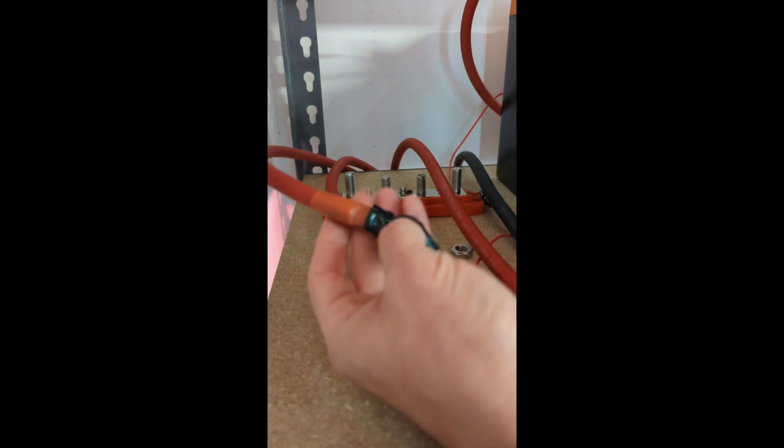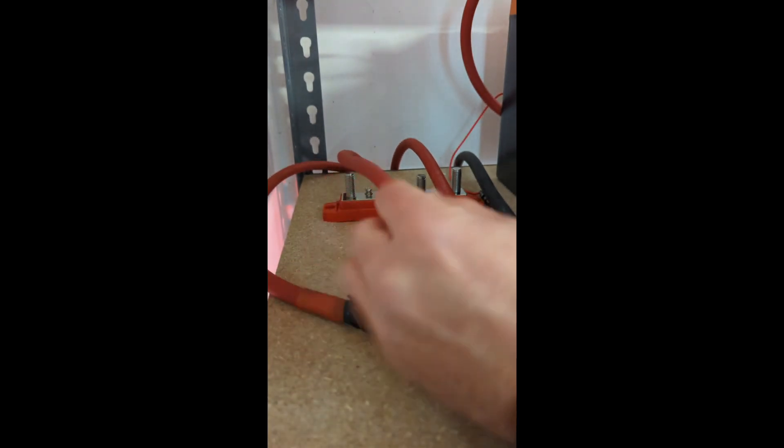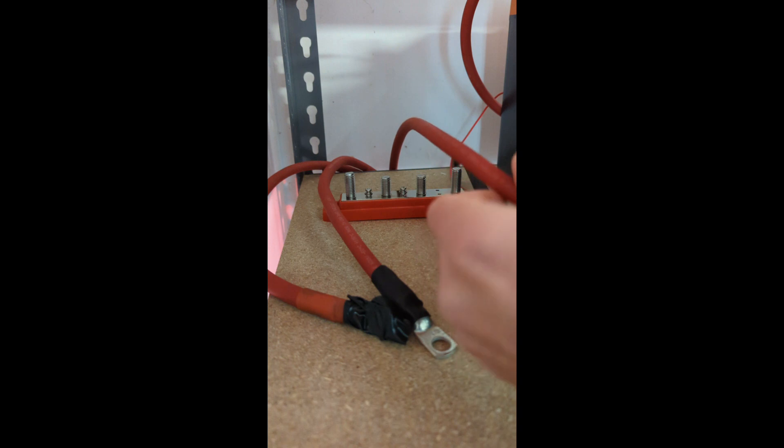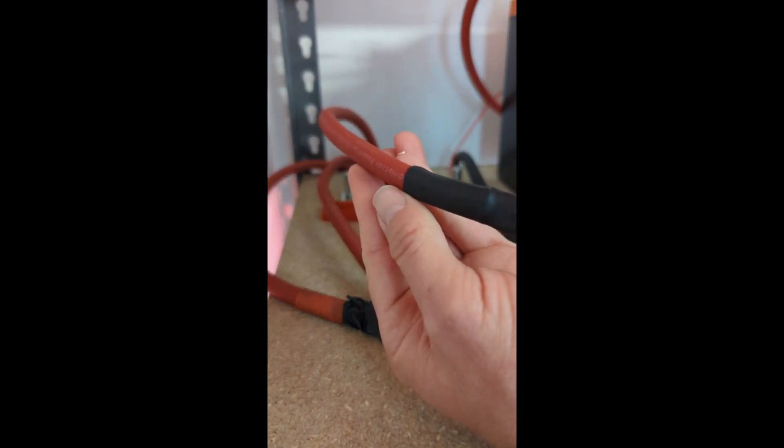Okay, so this is our main positive wire coming in off of our solar charge controller. This one's going to run down to our first battery bank and then this one will run to our second one.